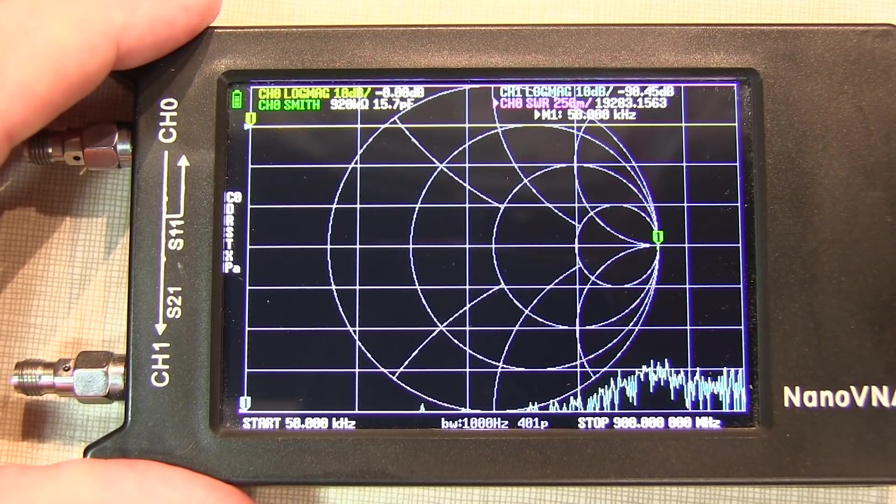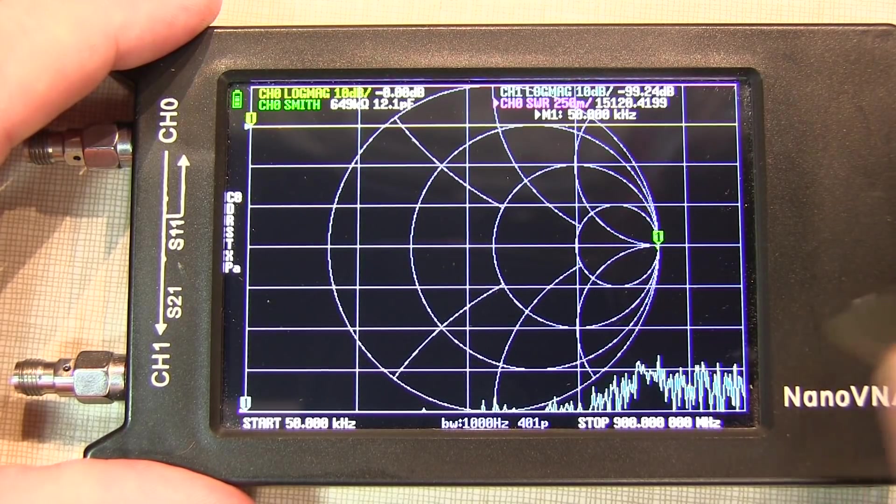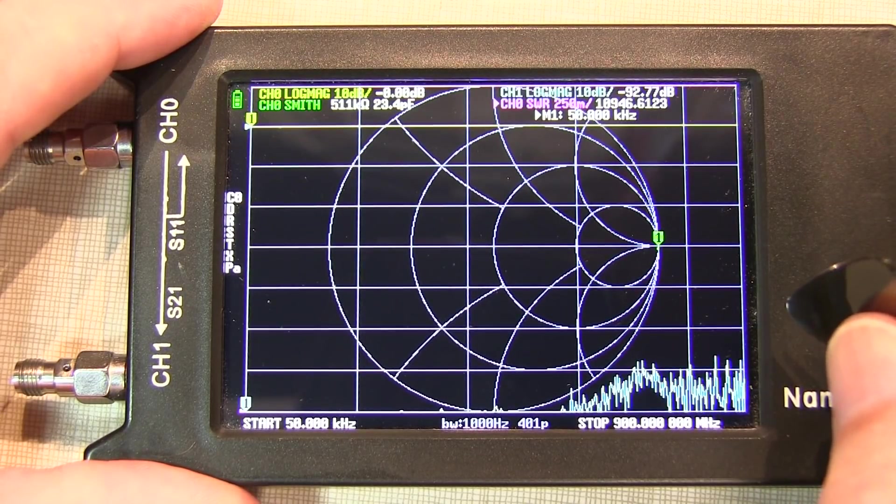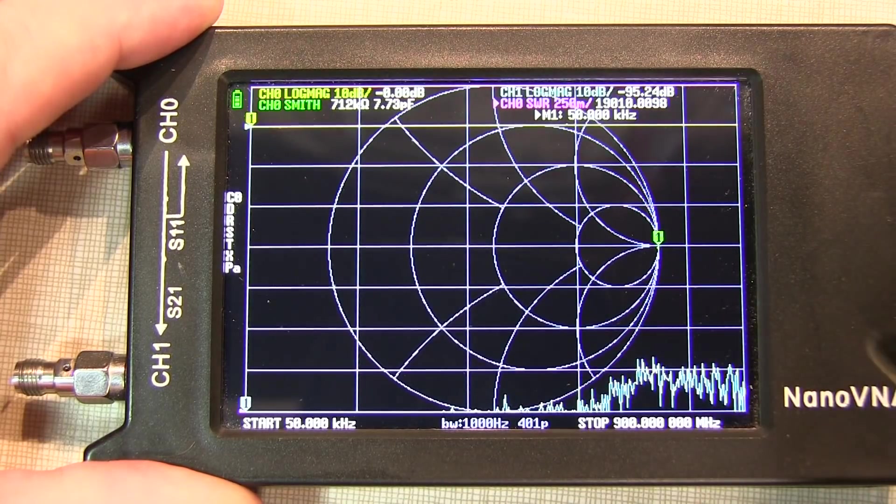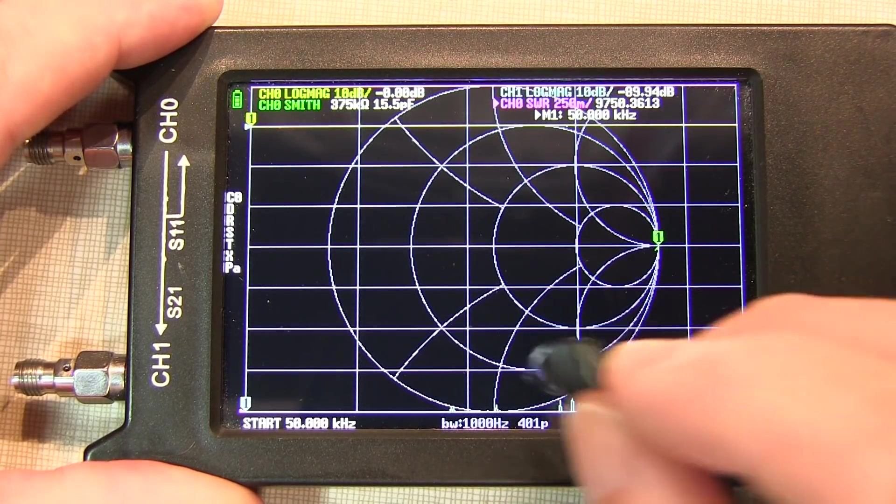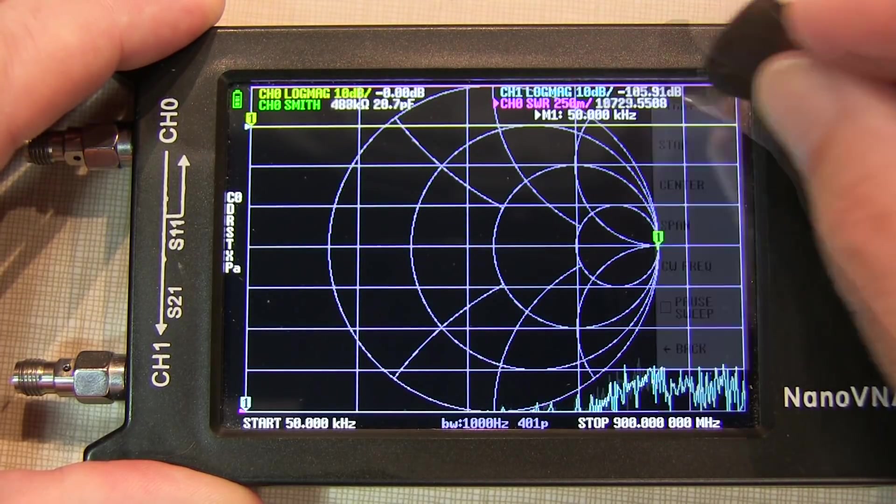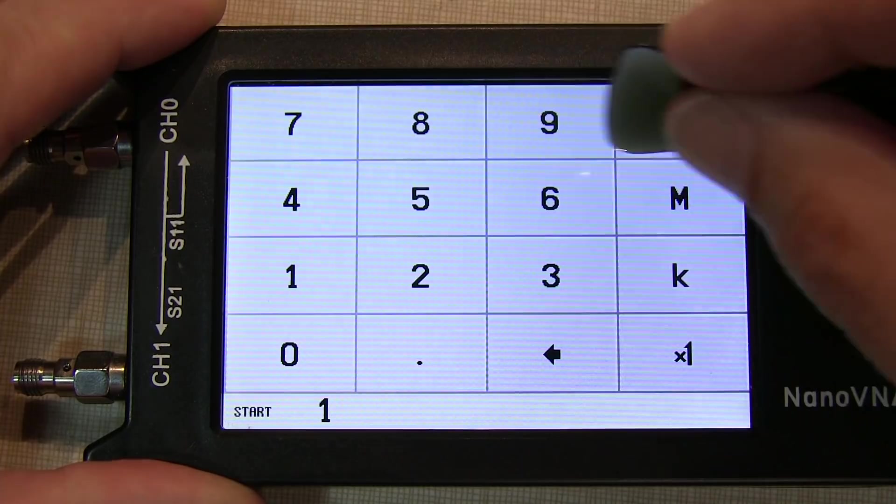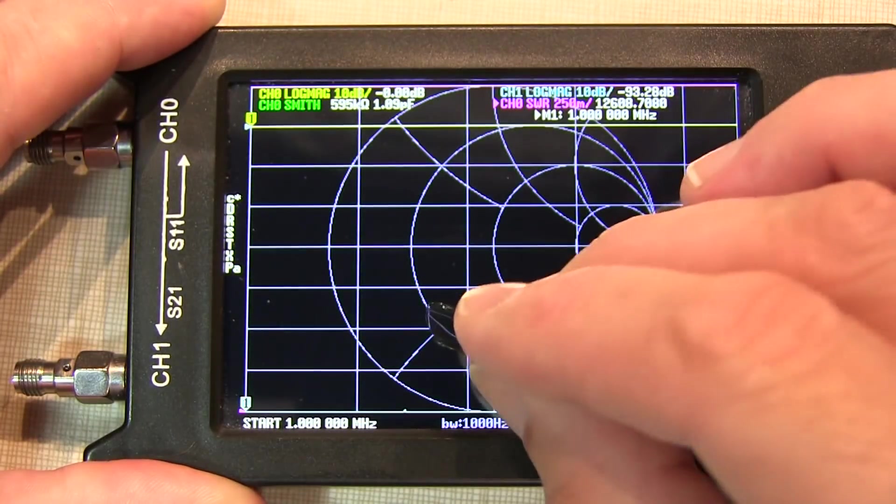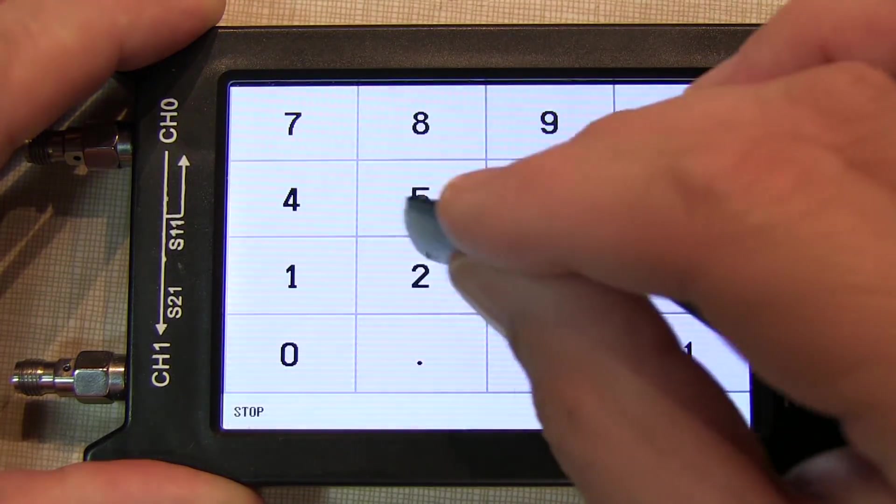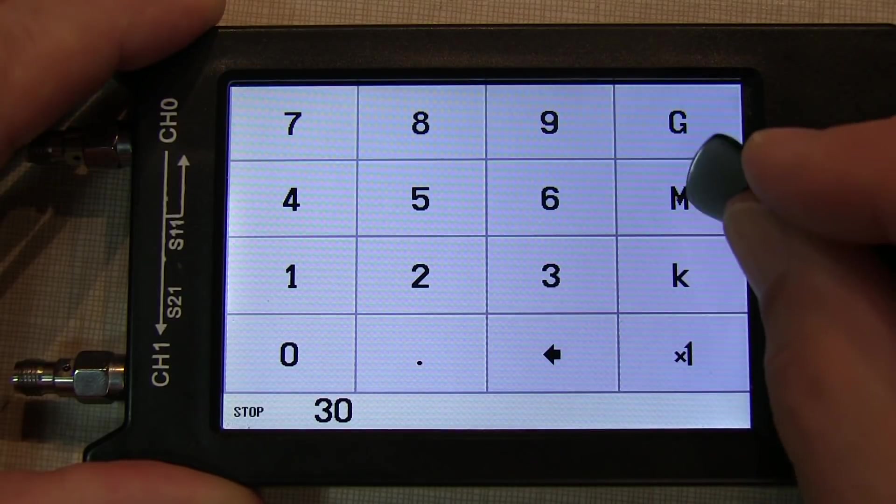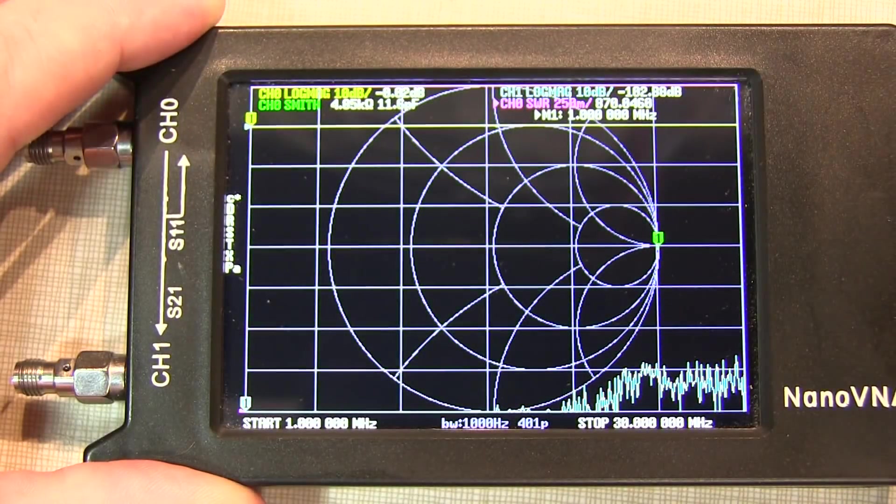Next let's set up the frequency range. The rigs that Bill was working on are primarily HF rigs. This amplifier is typically used in an IF stage, but let's cover the whole HF frequency band. So we'll go to stimulus, set our start to 1 MHz, and set our stop frequency to 30 MHz. So now we have our stimulus set up.